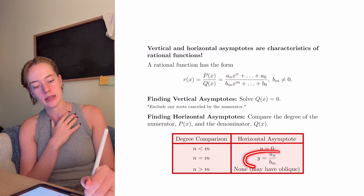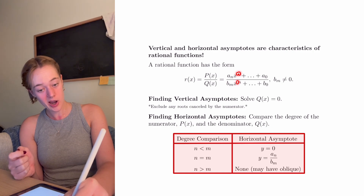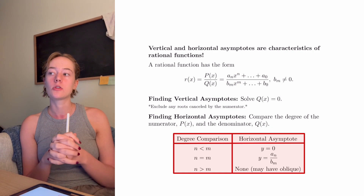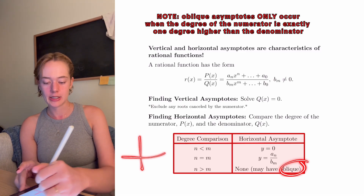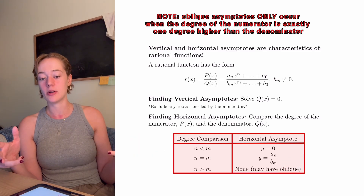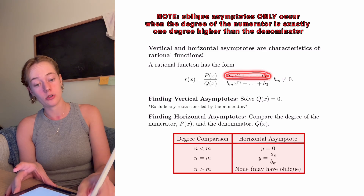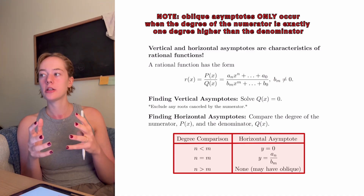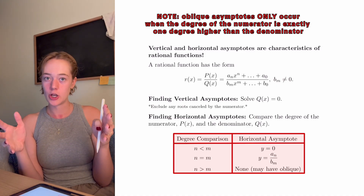In our last case, if the degree of the numerator is greater than the degree of the denominator, we won't have any horizontal asymptotes. We might have what we call an oblique or slant asymptote, which has a slant to it. To find the equation of this oblique asymptote, you do polynomial division of your rational function — numerator divided by denominator — and whatever your answer is, you ignore the remainder and the equation of the line you have is the equation of your oblique asymptote.